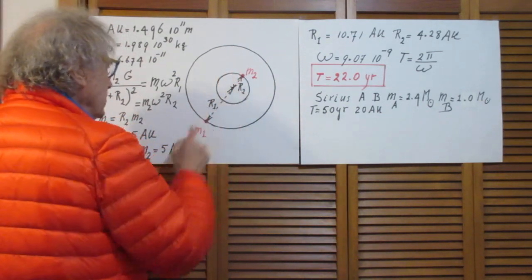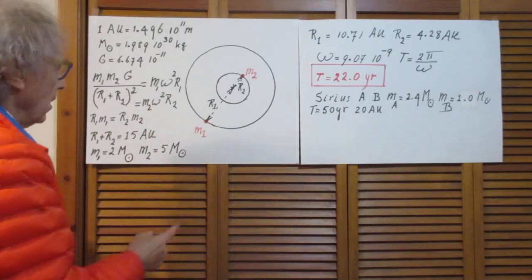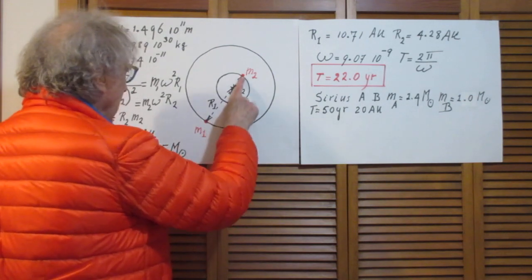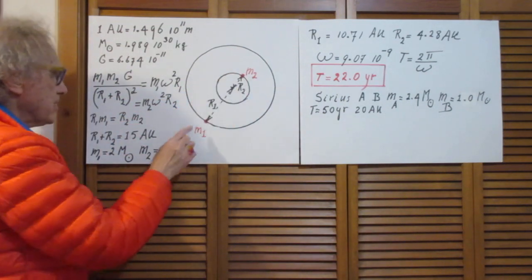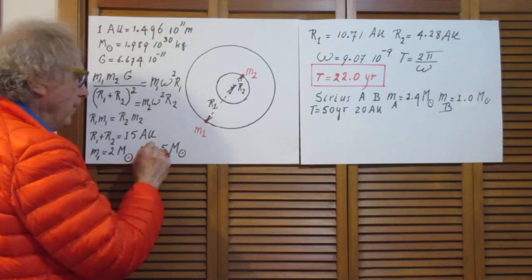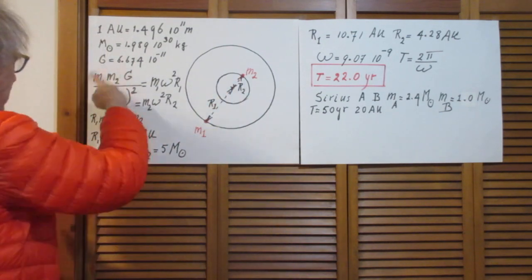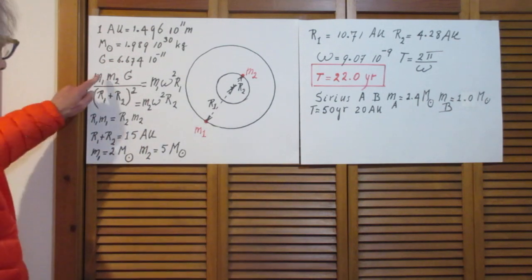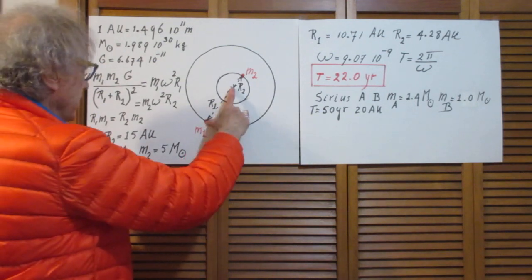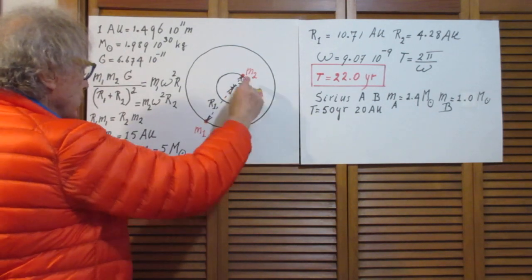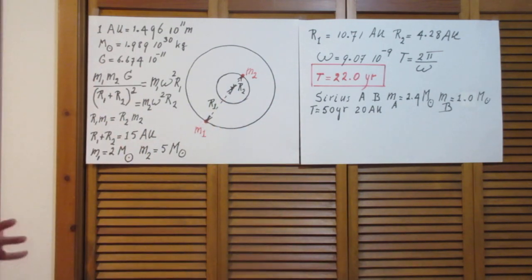These two stars, according to Newton's law of gravity, attract each other. There is a force on M2 due to the presence of M1 in this direction, and there is a force on M1 of the same magnitude due to the presence of M2 in this direction. And this is that force: it's M1 times M2 times G divided by the distance between the two squared. This is R1 plus R2, which is the 15 astronomical units.